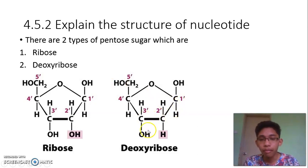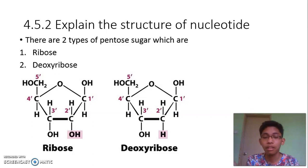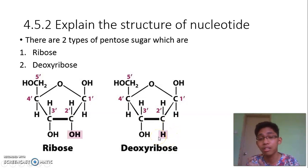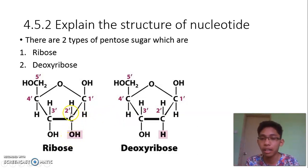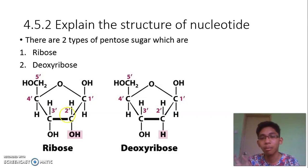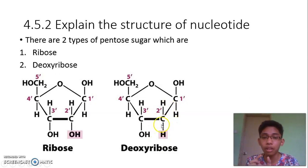For deoxyribose, at carbon number two there is no oxygen — that is why it is called 'deoxy', meaning no oxygen. For ribose, there is an oxygen atom at carbon number two. So ribose is like a normal sugar, but for deoxyribose there is no oxygen at carbon number two.